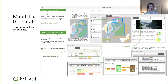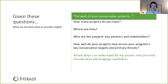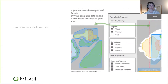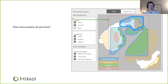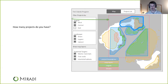This is a mock-up of management views to help answer the first key questions: for each of your conservation projects, why are you there and what value do you add? Given these questions, we want to find ways to provide good insights. Here's a view to give you an idea of how many projects you have, either through a map or with a project list. This would allow you to filter by different classifications that you set up in your system.